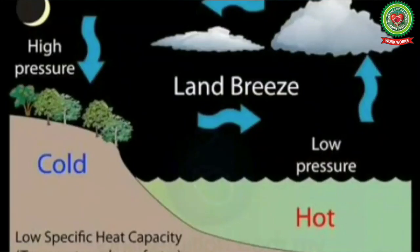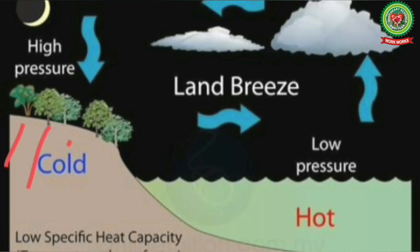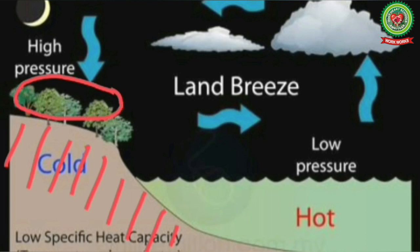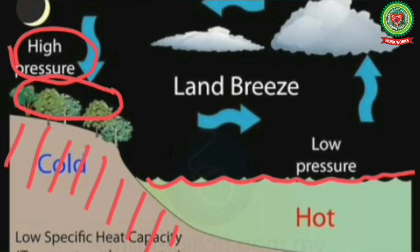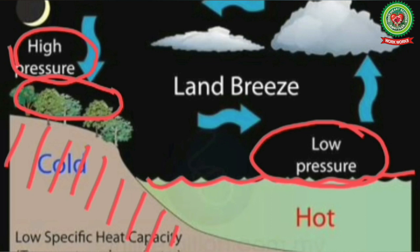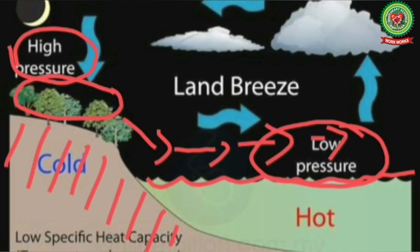At night, land gets cooled very fast. The air above the land is cool and heavy, thus a high pressure is created over the land. On the other hand, the sea is warm. The air above the sea is warm and light, so a low pressure is created over the sea. Thus, cold winds start blowing from the high pressure area on the land to the low pressure area on the sea. This is called land breeze.